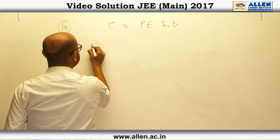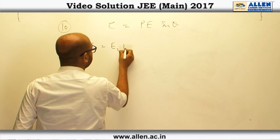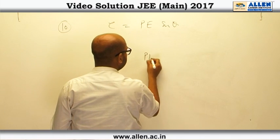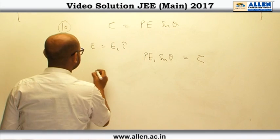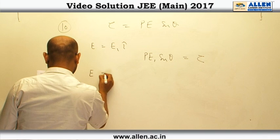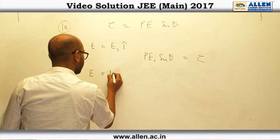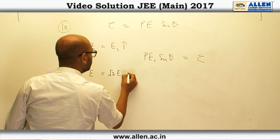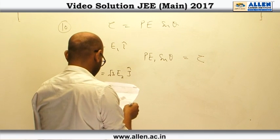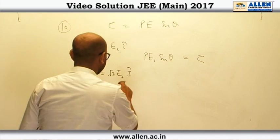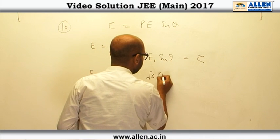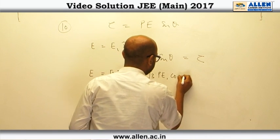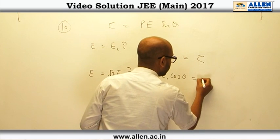So in the first part E is E1 i cap, so the torque will be P E1 sin theta which is given tau. And in the second case E is equal to root 3 E2 j cap, root 3 E1 j cap. So the torque will be root 3 P E1 cos theta with minus sign and it is given minus tau.